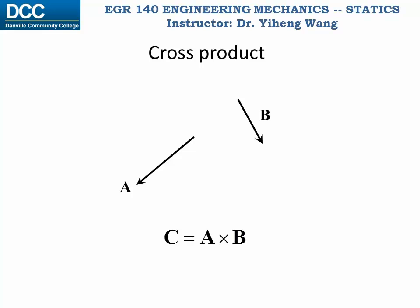Here's a quick review of vector cross product. Let C be the cross product of two arbitrary vectors A and B: C equals A cross B. We can join the tails of the two vectors together and then determine the angle between them, theta. The magnitude of vector C is determined as the magnitude of vector A times the magnitude of vector B times sine theta.